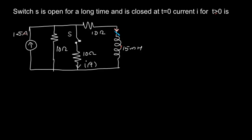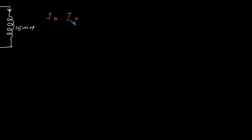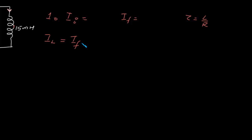We have an inductor in the circuit with a DC current flowing through. First we will see what is the case of an inductor. When we have a steady state initial current, we call it i_initial; a steady state final current, we call it i_final; and the time constant of the circuit is L by R. The current through an inductor is: i_final plus (i_initial minus i_final) into exponential of minus t by tau.